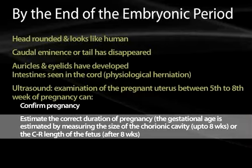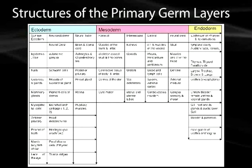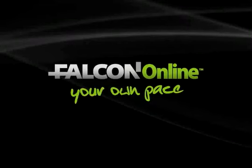Finally, here are some structures derived from the primary germ layers — ectoderm, mesoderm, and endoderm. Take time to review what is derived from each of these during the early embryonic periods. That concludes portion five. In portion six, we'll start looking at the somites and muscle development.